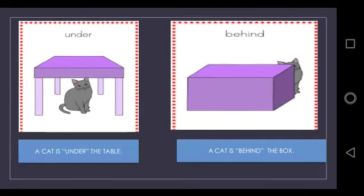In the next picture, a cat is under the table. The word under tells us where the cat is. The cat is under the table.